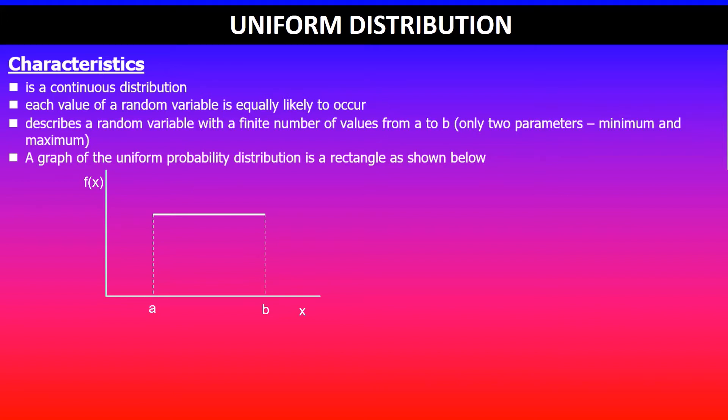Note that the area underneath this will denote the probability, and the total area will be equal to one. As you already know, the area of a rectangle is given by base times height. In this case, the base of this rectangle is from a to b.